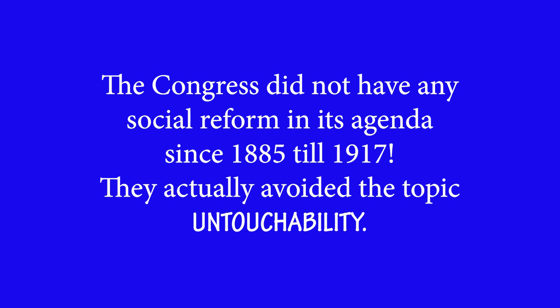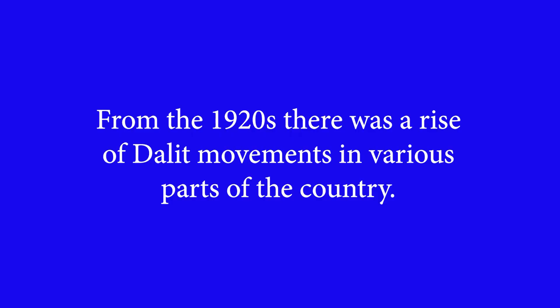You might wonder what the Indian National Congress was doing as a political body. Frankly, the Congress did not have any social reforms in its agenda till 1917 — that is, from its inception in 1885. The Indian National Congress actually avoided sensitive topics like untouchability, but they had to take it up when Dalit leaders had organized themselves and were about to steal the initiative from the Congress. From the beginning of the 1920s, there was a rise of the Dalit movement in various parts of the country.